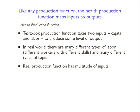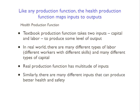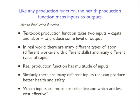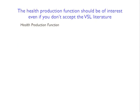Likewise, there are a lot of different inputs that could potentially be used to produce better health and safety, and which inputs are more cost-effective is important for maximizing overall population health. One thing that's particularly useful about talking about the health production function is that it should really be of interest even if you don't accept the VSL literature. A lot of people are unwilling to put a specific price on human life, and I said that VSL is really measuring people's willingness to pay for small changes in risk - so you shouldn't really think of it as a price for a specific life. But I think a lot of people are still very uncomfortable with the idea.